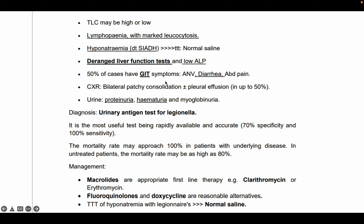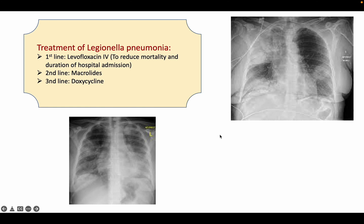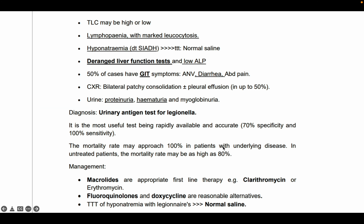Some patients may have GI symptoms like diarrhea or abdominal pain. On chest X-ray, you will see bilateral patchy consolidation with or without pleural effusion. In the urine, there may be proteinuria, hematuria, and myoglobinuria. In the image shown here, the patient has Legionella pneumophilia presenting as atypical community-acquired pneumonia — bilateral consolidation is present along with deranged liver function tests or GI problems — consistent with Legionella pneumonia.